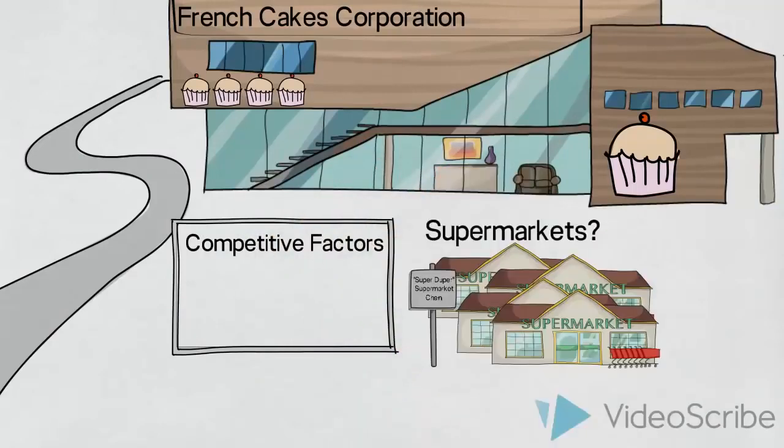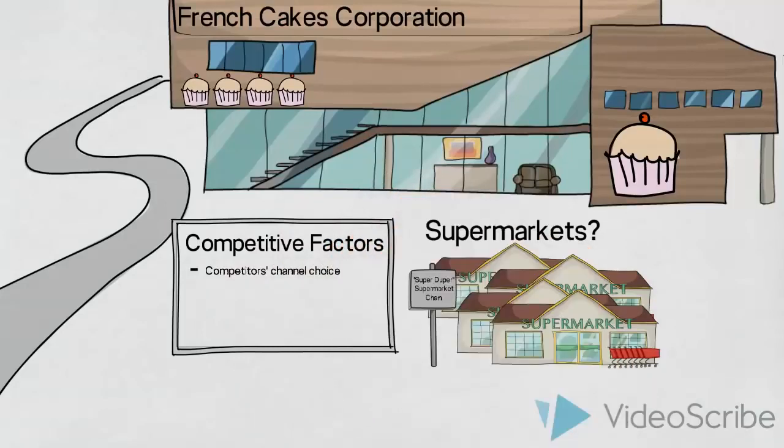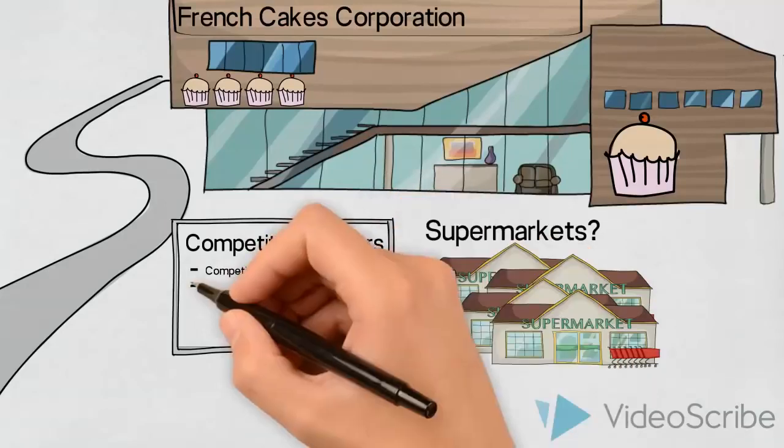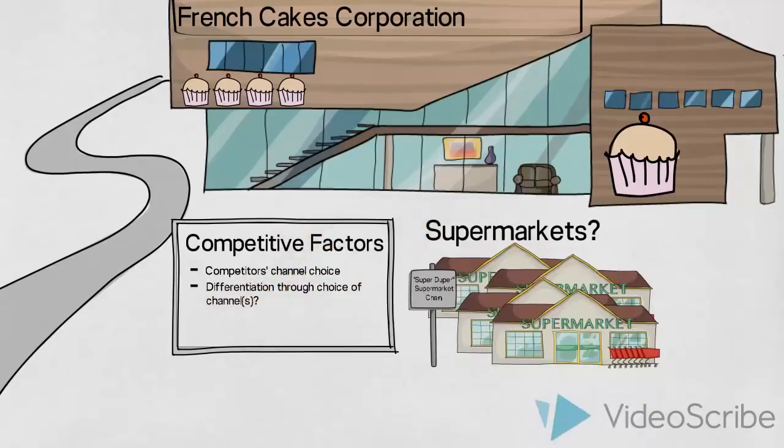Firstly, which channels are their competitors using? And secondly, is it possible to achieve differentiation through choice of channel? Let us imagine that in one particular supermarket chain, consumers are not exposed to the competitors' cakes or desserts. Distributing the products through this chain would therefore enable them to differentiate from the competition and ultimately have a better chance of selling their products to the end consumers.